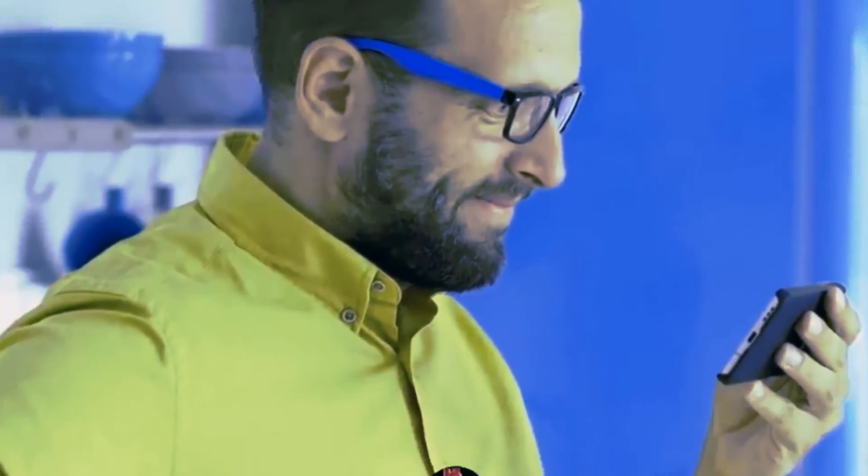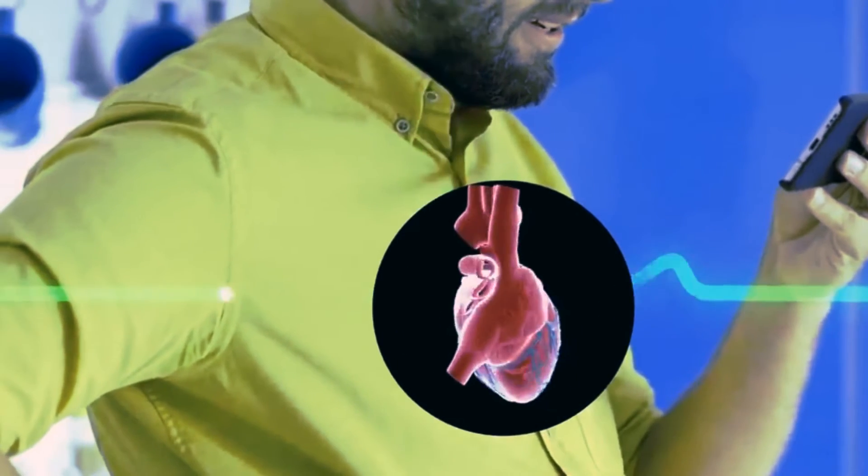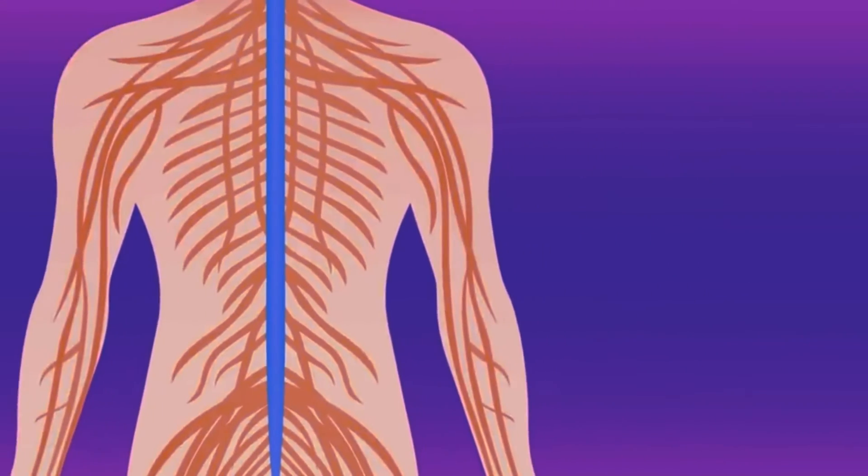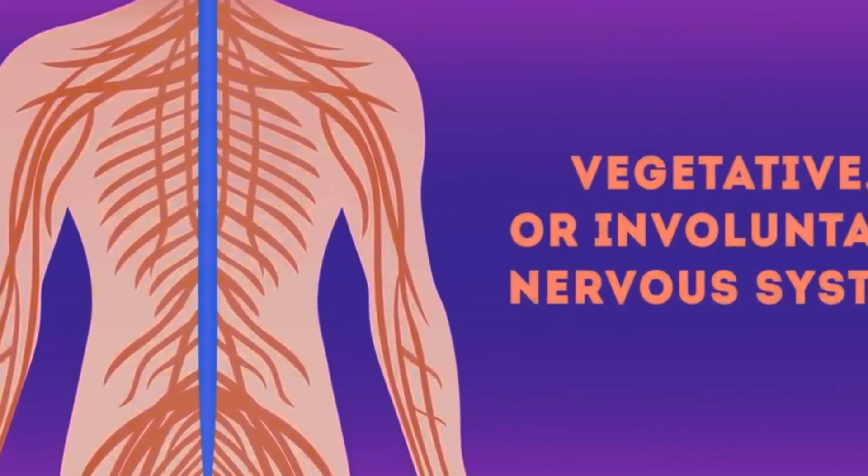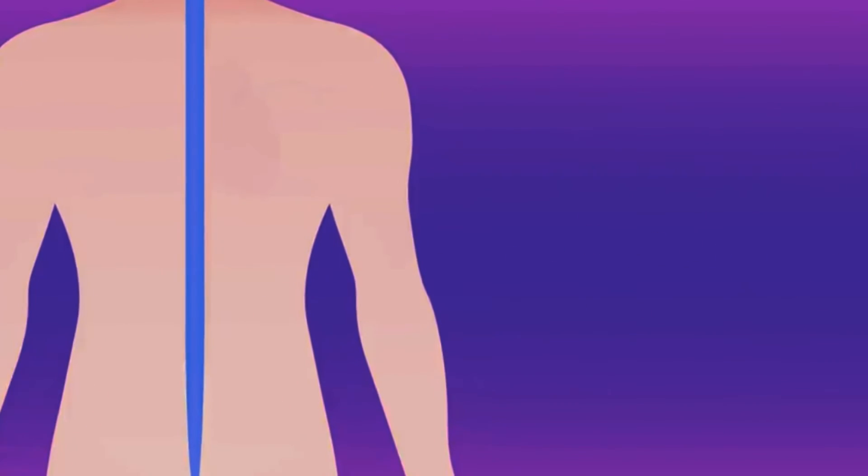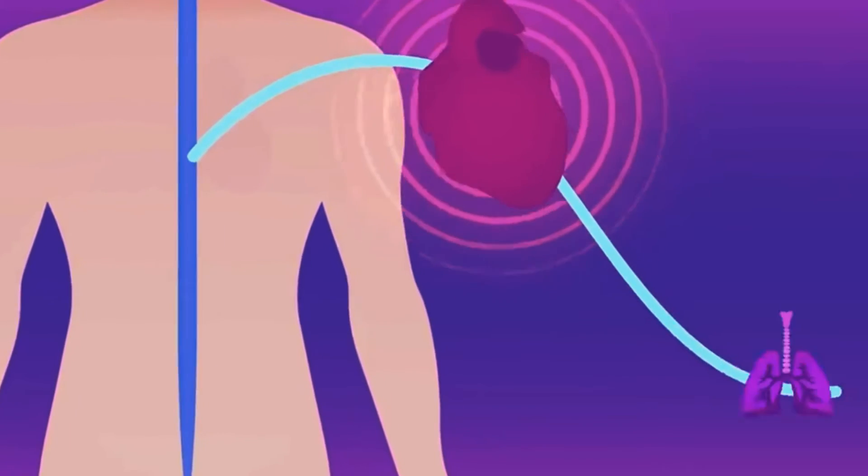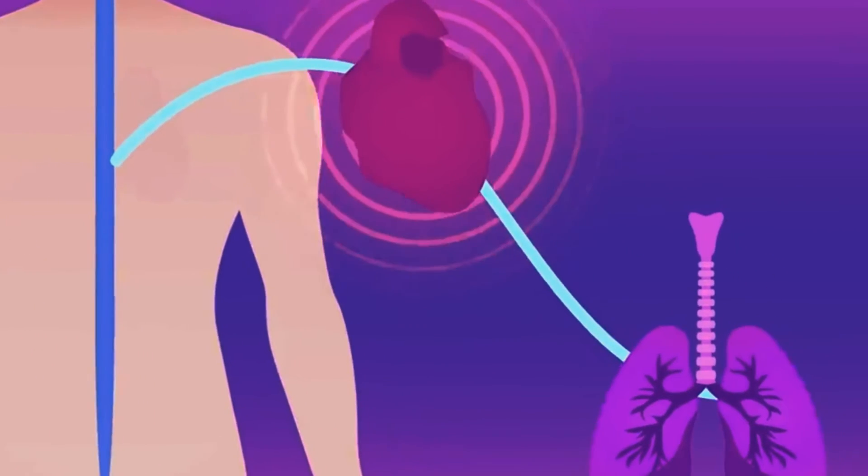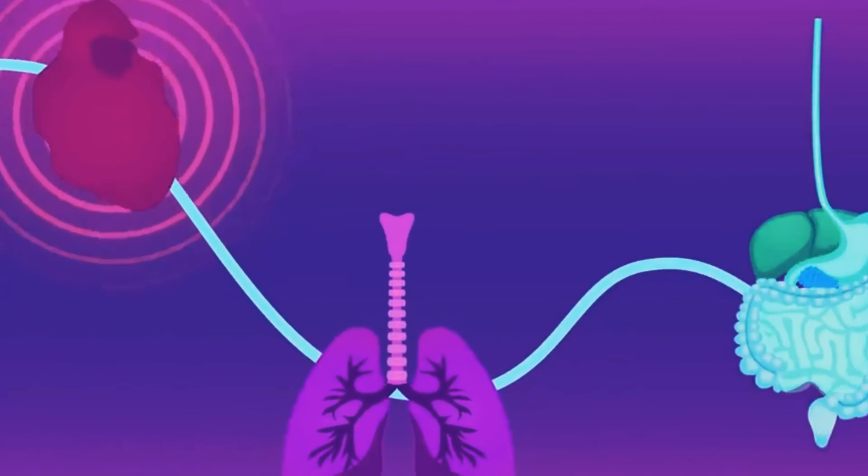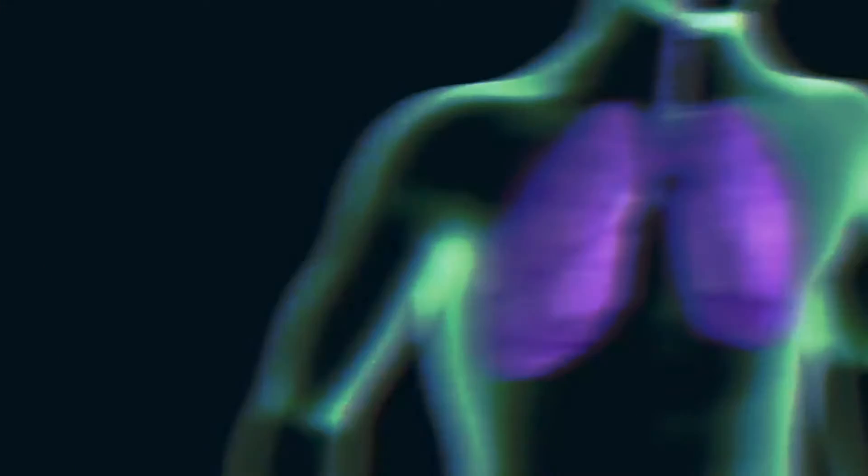6. There are two types of nervous systems. Each person has a CNS and a PNS, but also has a voluntary and involuntary nervous system. The body's voluntary, somatic, nervous system controls things that a person is aware of and can control consciously, such as the movement of the head, arms, legs, or other parts of the body.